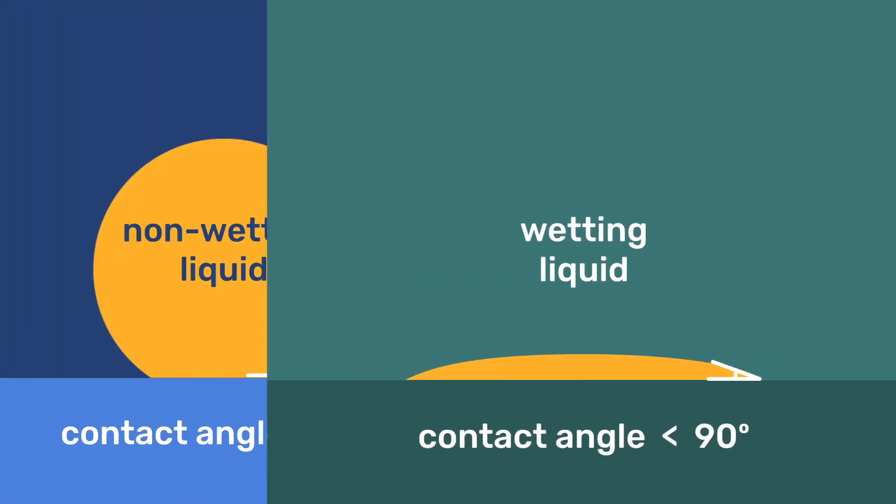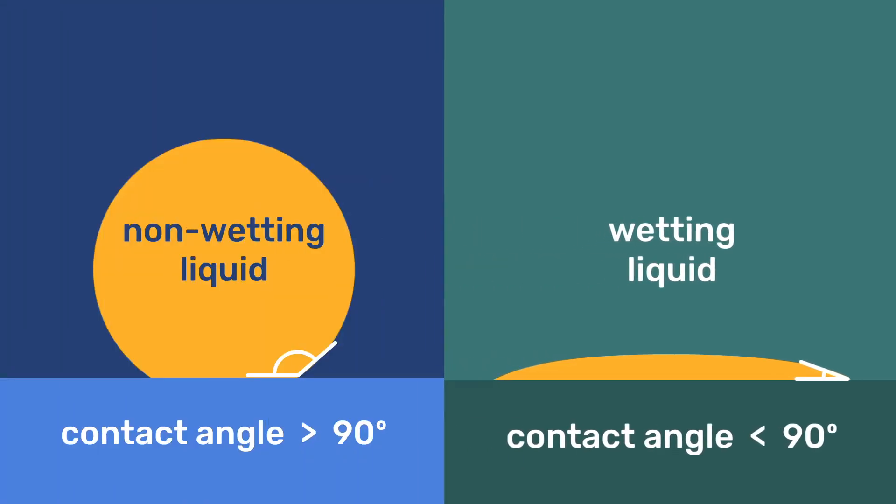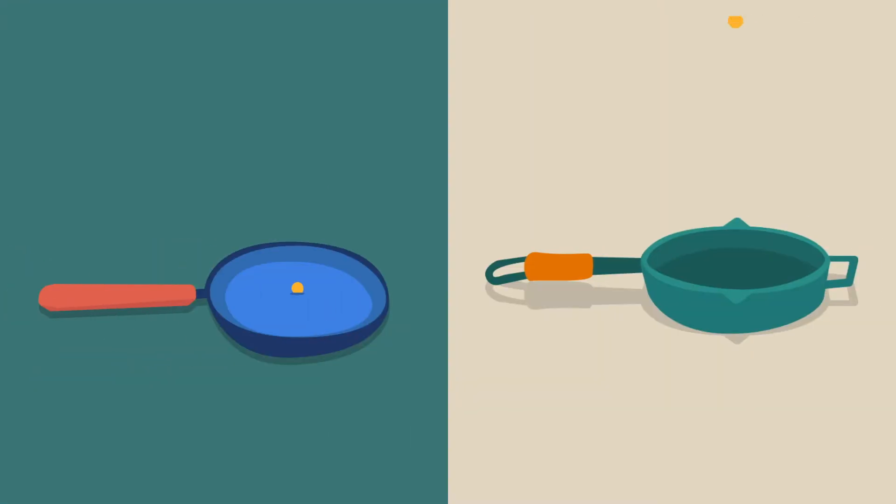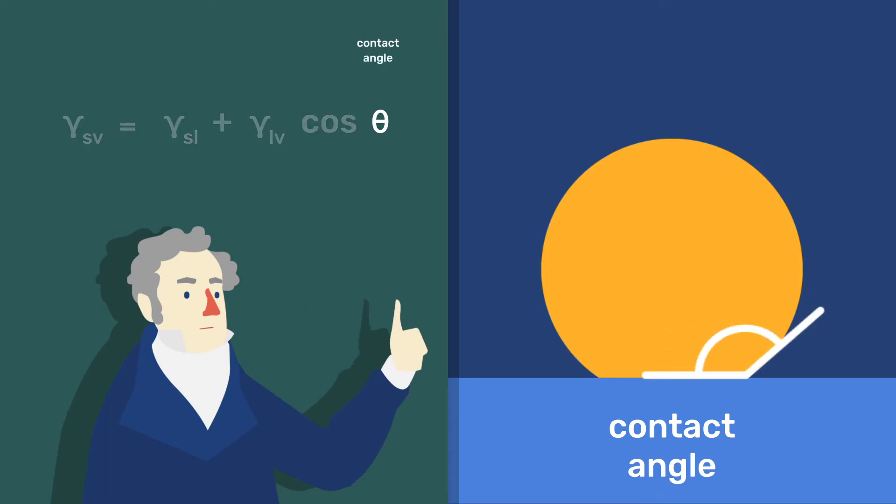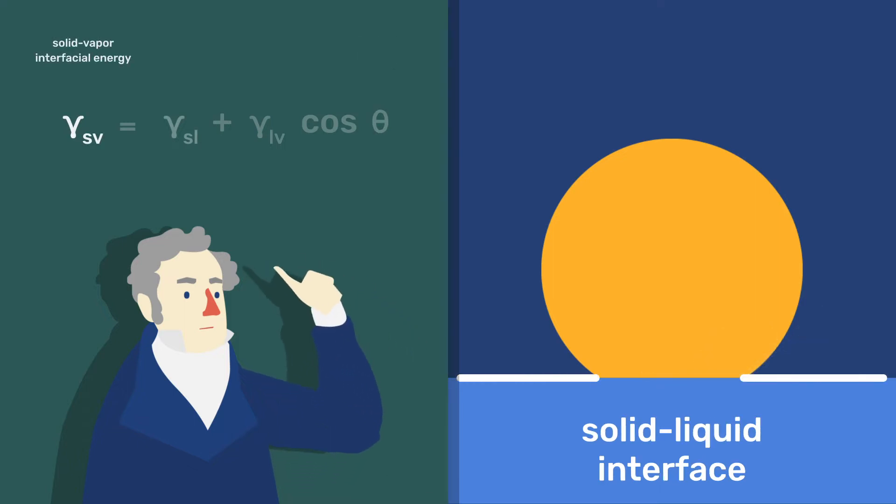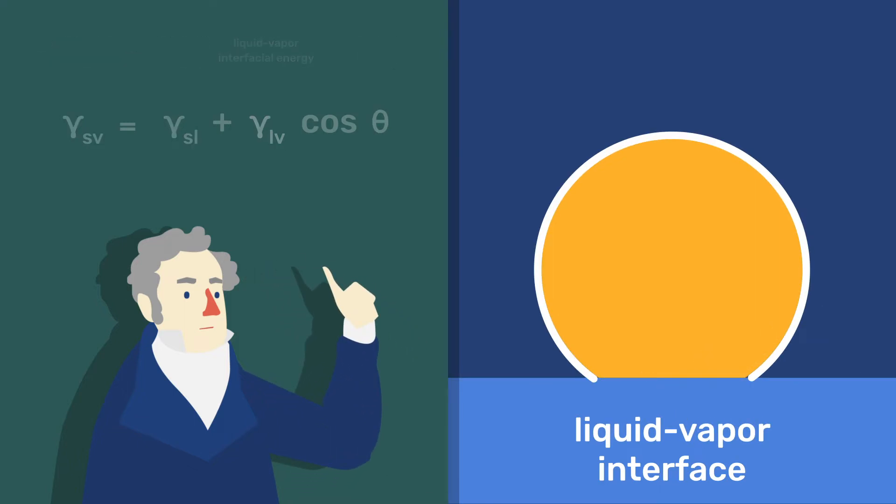The contact angle is an important property describing the interaction between solids and liquids, and Thomas Young, the famous British scientist, proposed an equation relating this angle to the interfacial energies of the solid-vapor, solid-liquid, and liquid-vapor interfaces, all indicated by the letter gamma with the corresponding subscripts.